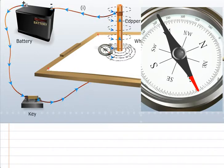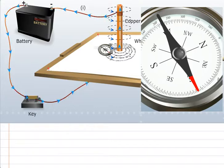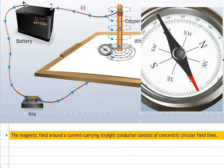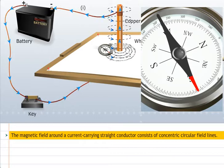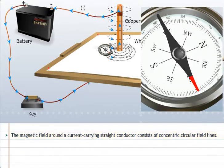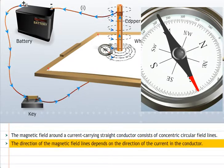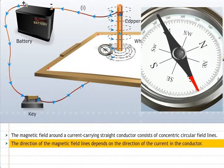Thus, based on this experiment, you can conclude that a magnetic field around a straight current carrying conductor consists of concentric circular field lines. The direction of the magnetic field lines depends on the direction of the current in the conductor.